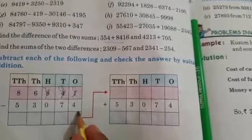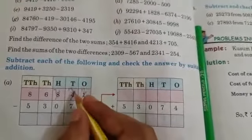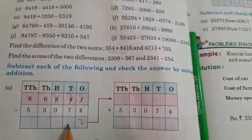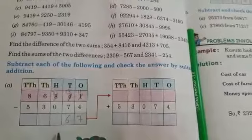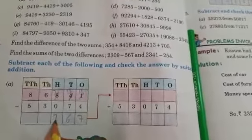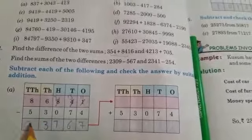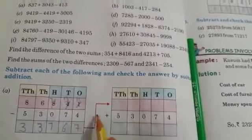11 minus 4 is 7, 13 minus 7 is 6, 7 minus 0 is 7, 6 minus 3 is 3, 8 minus 5 is 3. Now, you can see the arrow like this.